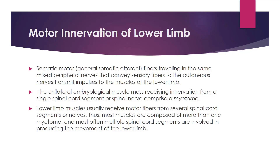Motor innervation of the lower limb: somatic motor fibers travel in the same mixed peripheral nerves that convey sensory fibers to the cutaneous nerves, transmitting impulses to the muscles of the lower limb. A myotome is the unilateral embryological muscle mass receiving innervation from a single spinal cord segment or spinal nerve. Lower limb muscles usually receive motor fibers from several spinal cord segments, so most muscles are composed of more than one myotome.